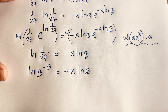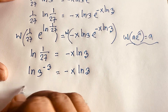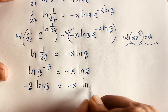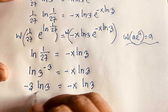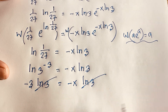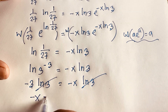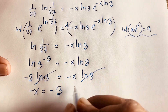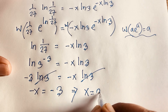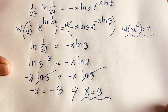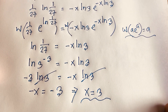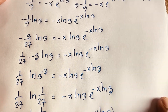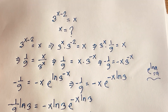Since ln of 1 over 27 equals ln 3 to the power minus 3, and the exponent moves in front to give minus 3 ln 3, the equation becomes minus 3 ln 3 equals minus x ln 3. Dividing both sides by ln 3, we get minus 3 equals minus x, so x equals 3. This is the value of x in this Maths Olympiad question. Thank you all — please subscribe for more interesting videos. Goodbye!